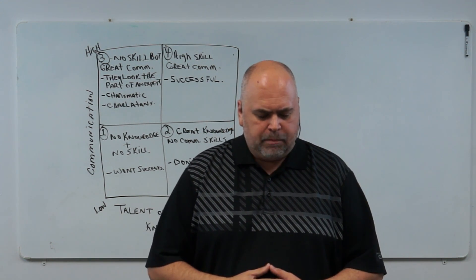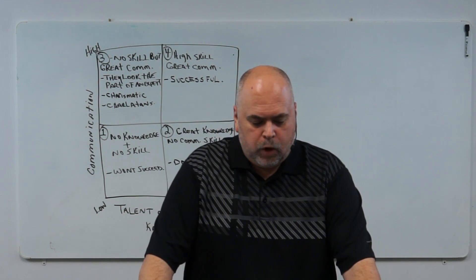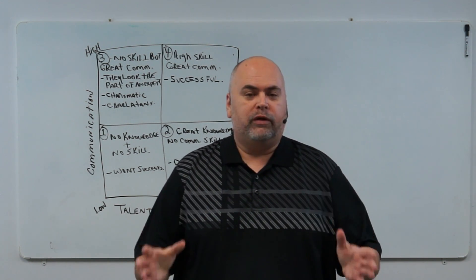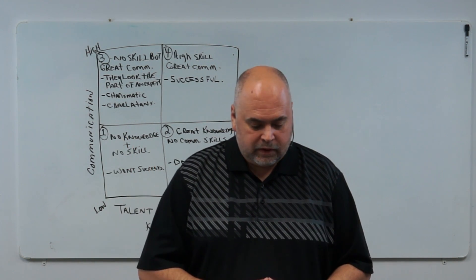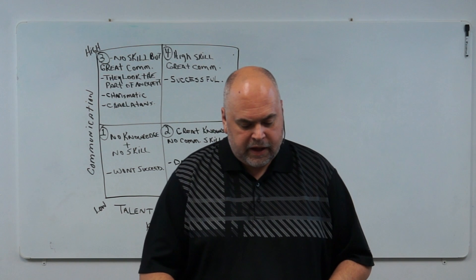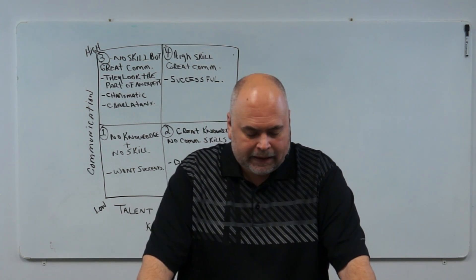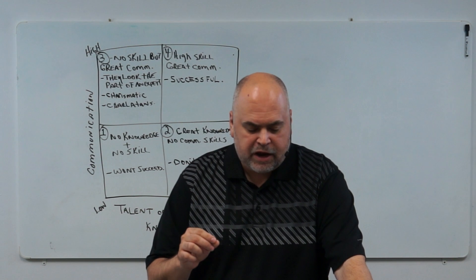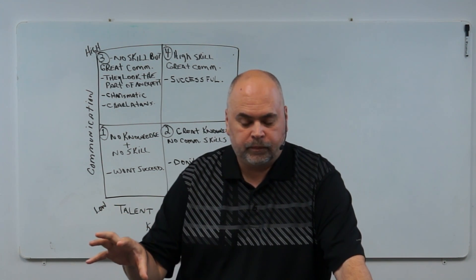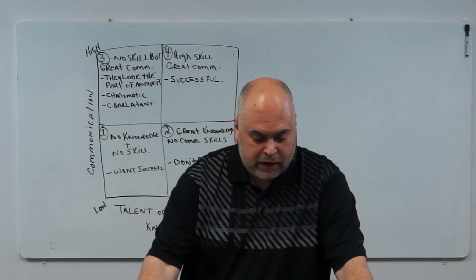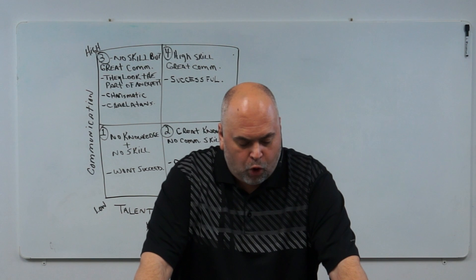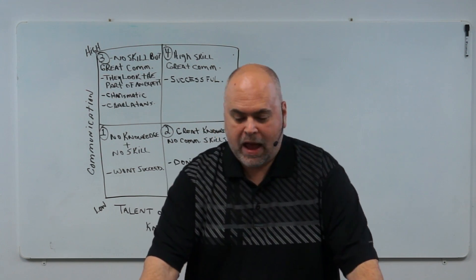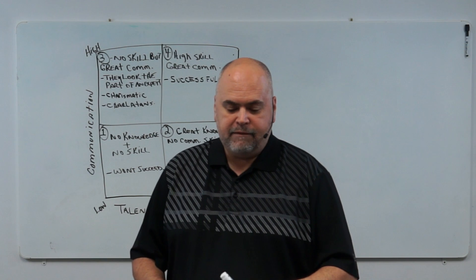Box one: low skill, no ability to communicate — these ones aren't going anywhere. Box four: high on both ends of the scale — they're going to succeed. Box three: communicates great but they're fake, not much knowledge, but they can sell it through their great presentation. They're dangerous because they look the part but don't deliver. Box two: great knowledge and skill, but often overlooked because of poor communication skills. People are more attracted to the great charismatic speaker, even though they need the expert.